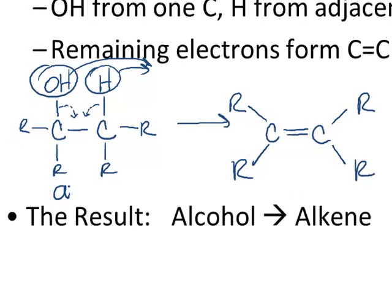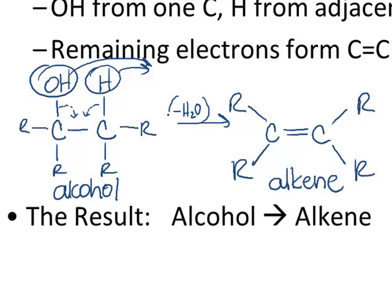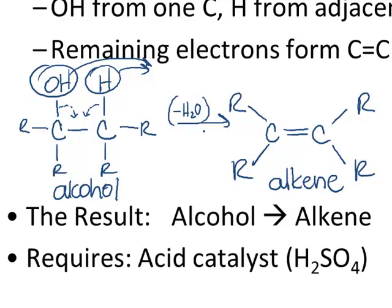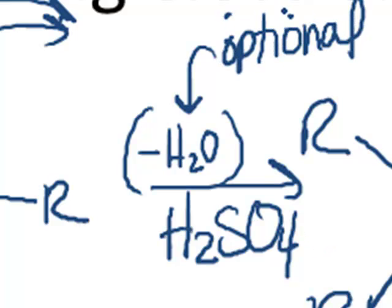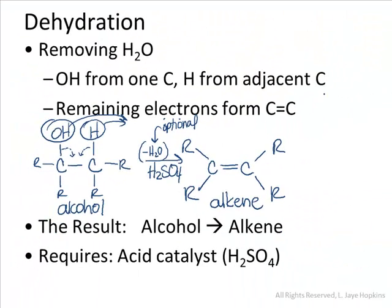The result is that we start with something that has the alcohol functional group and end with a molecule that now has an alkene functional group. This reaction requires sulfuric acid as a catalyst — we frequently write H2SO4 either above or below the arrow. Writing the H2SO4 is required because the reaction won't happen without this acid catalyst. Writing minus H2O is really optional, but most people appreciate seeing it because it gives a quick indication of what's happening. You should be able to recognize this reaction whether or not the minus H2O notation is present.